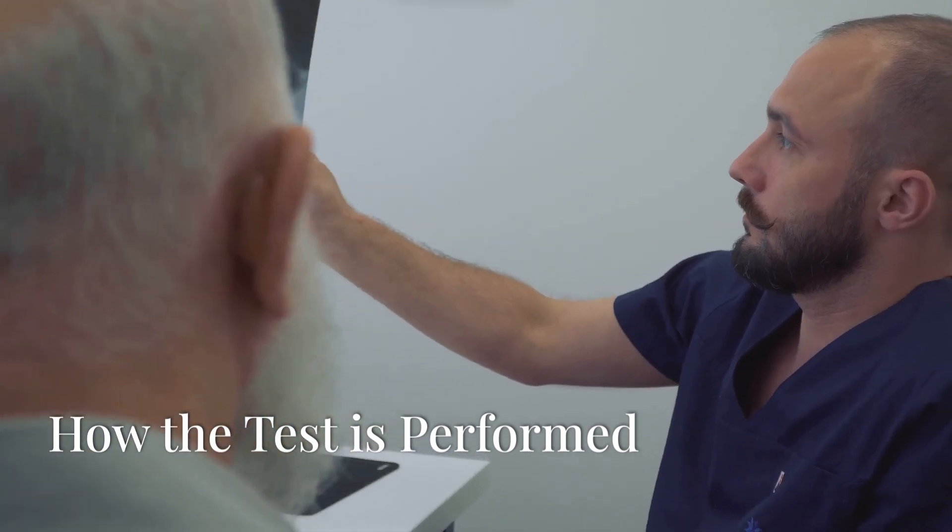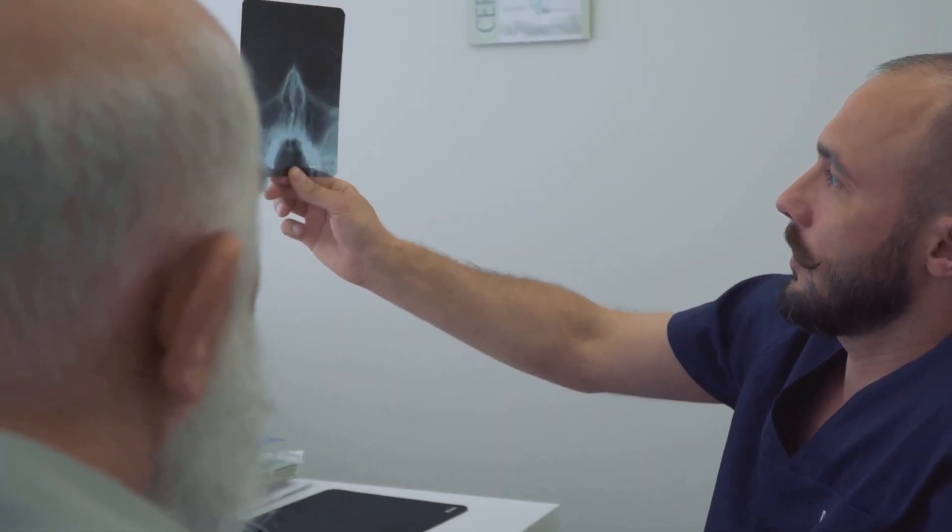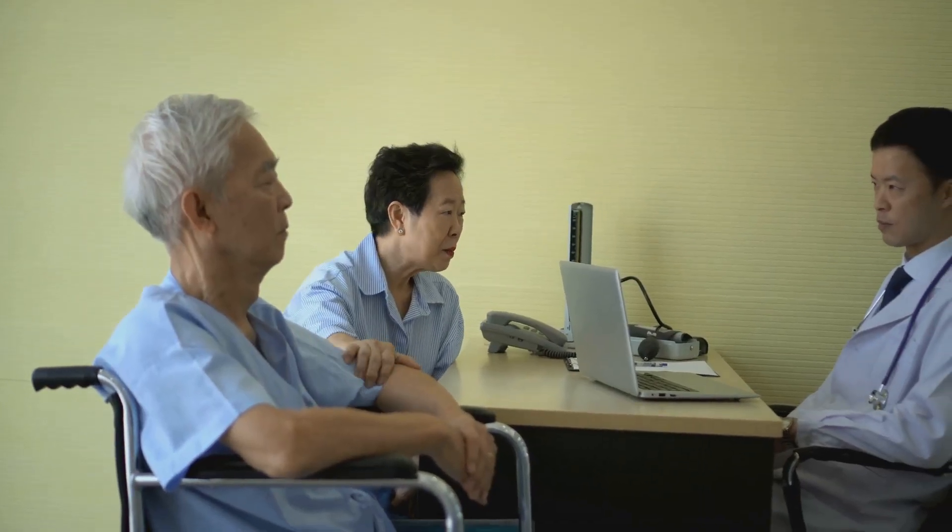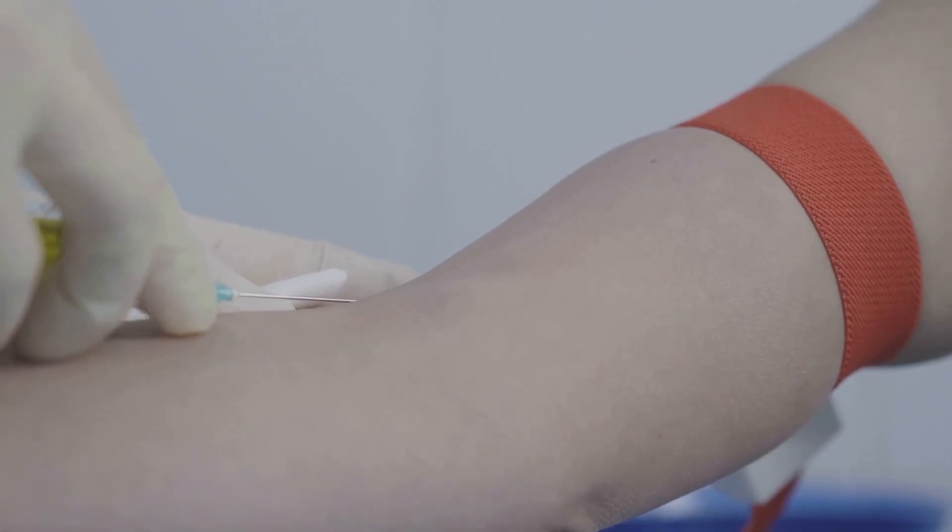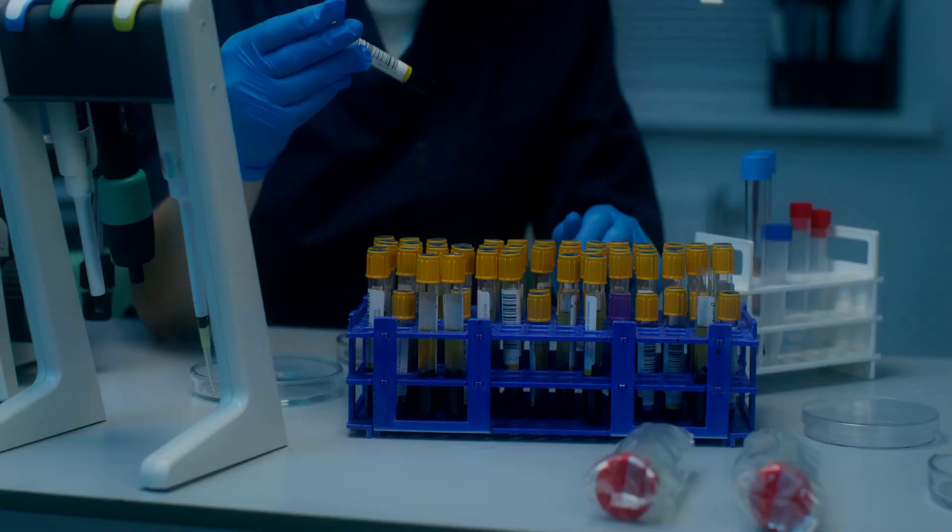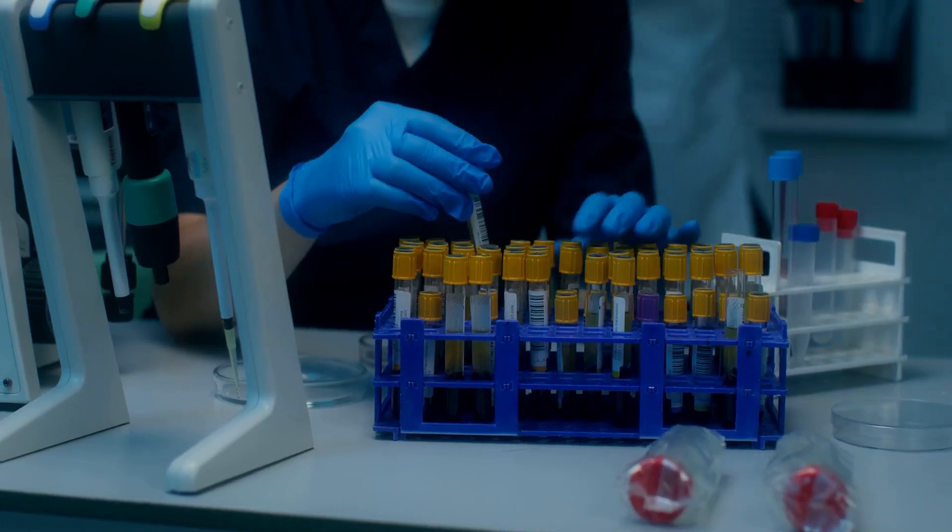So how is the NT-proBNP test performed? It's a straightforward blood test. Here's what you can expect: First, a healthcare professional will draw a small sample of blood from your vein, typically from your arm. Then the blood sample is sent to the lab where specialized equipment measures the NT-proBNP levels. That's it—no fasting or special preparation is usually required unless your doctor advises otherwise.